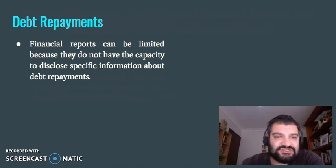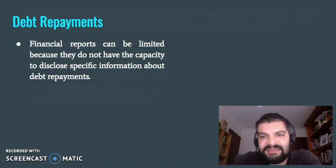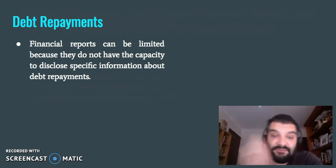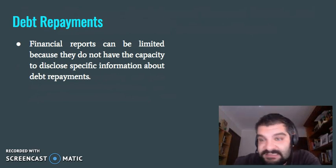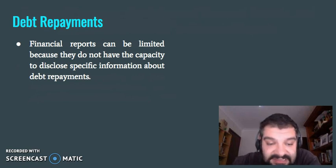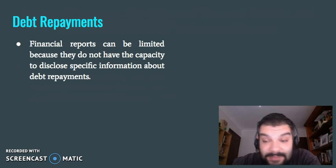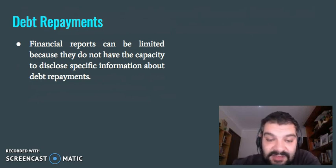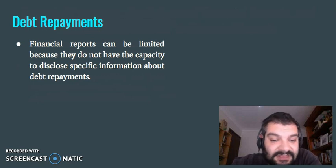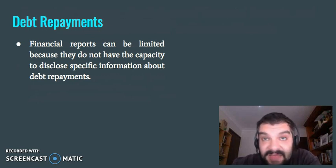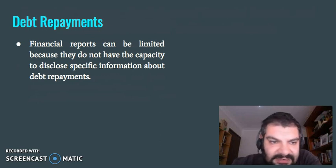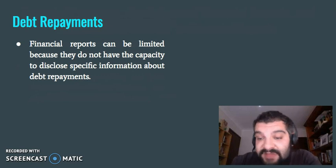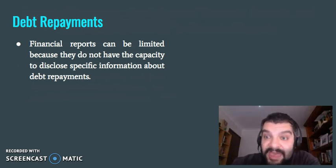Debt repayments are a limitation as well. Financial reports can be limited because they don't really have the ability to disclose a lot of specific information about debt repayments — for example, how long the business has had that debt or how long they've been trying to recover it. The capacity of the business to actually repay what it owes, or what happens if they go into bankruptcy and can't pay the debt — that's not going to be on a report. The adequacy of provisions and methods for recovery of debt, and what strategies they have in place if they can't recover it, won't appear on any financial report.